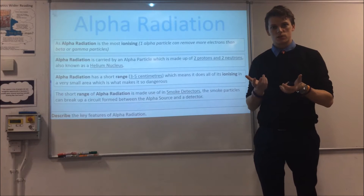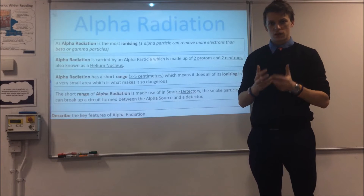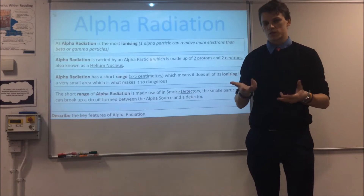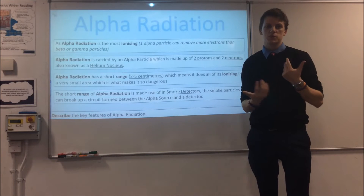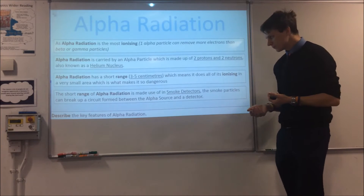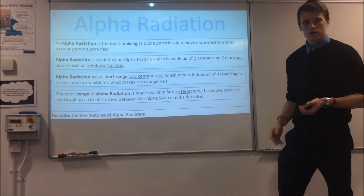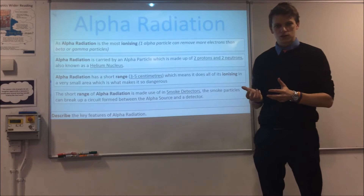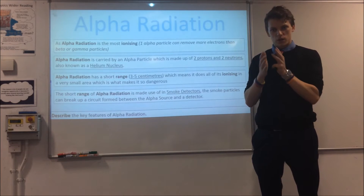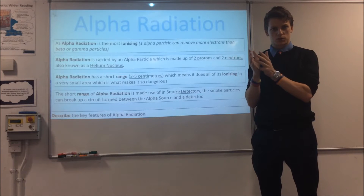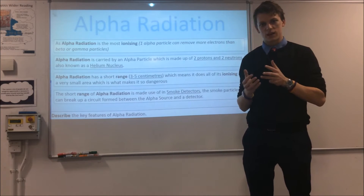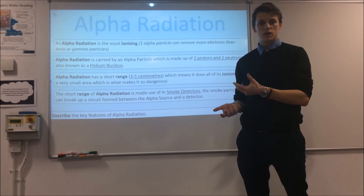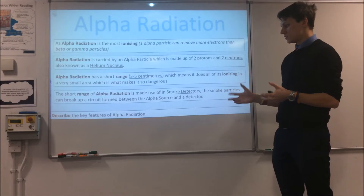That's why alpha radiation is so toxic if ingested — it would cause a large amount of damage or cell mutations in a very small area, which is very bad for you. But it's also the reason it's not particularly dangerous outside the body, because your skin acts as a barrier. In terms of useful applications, if you look around the room you're in right now, you should probably see a smoke detector. That detector makes use of the short range of alpha radiation: it sets up a circuit with a very small gap that alpha particles can cross. When smoke particles get into that gap, they block the alpha radiation, stopping the circuit from completing and setting off the alarm.